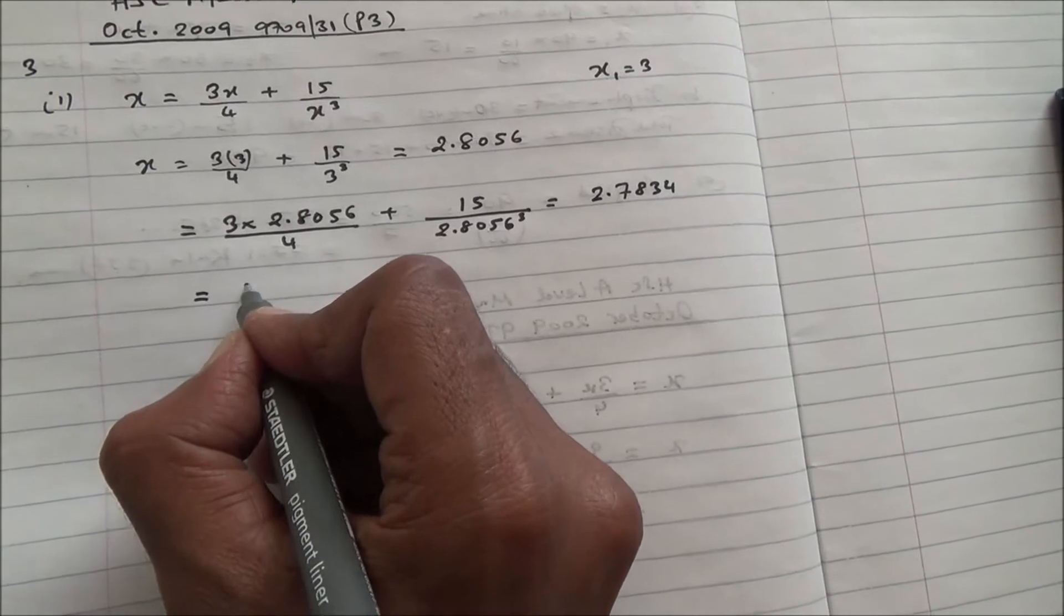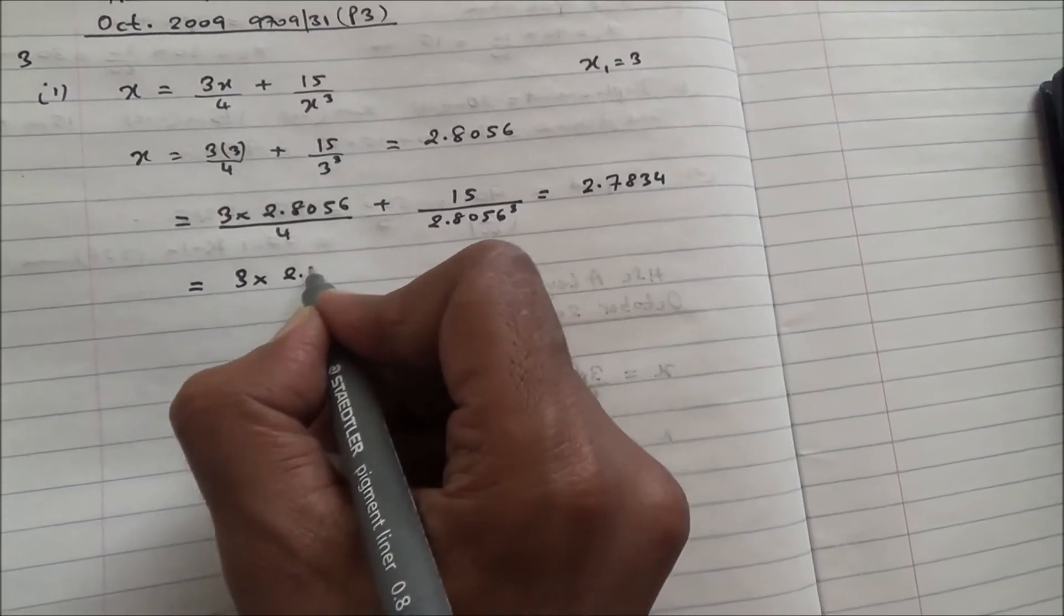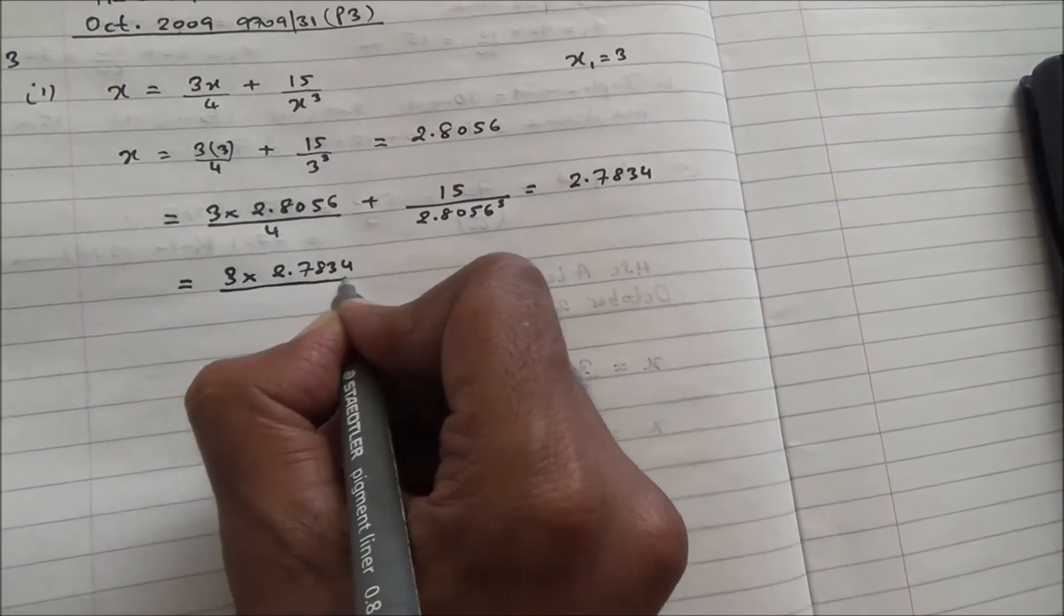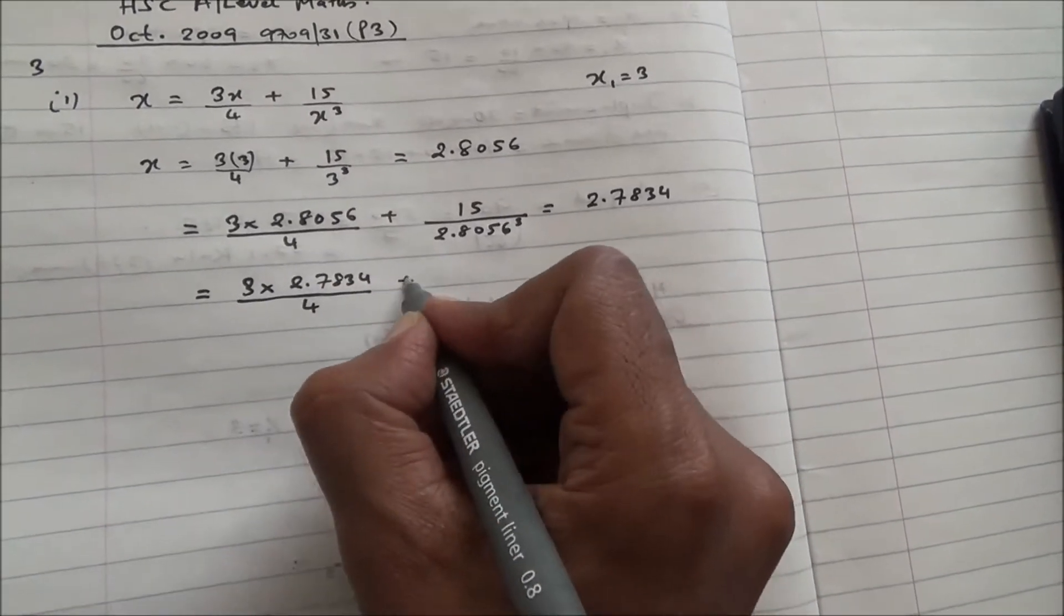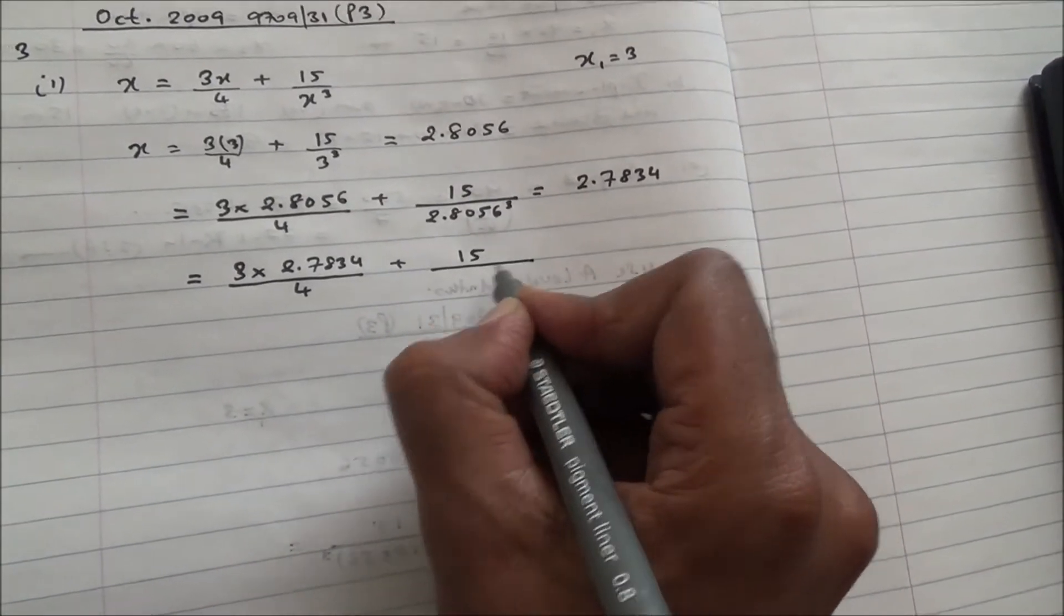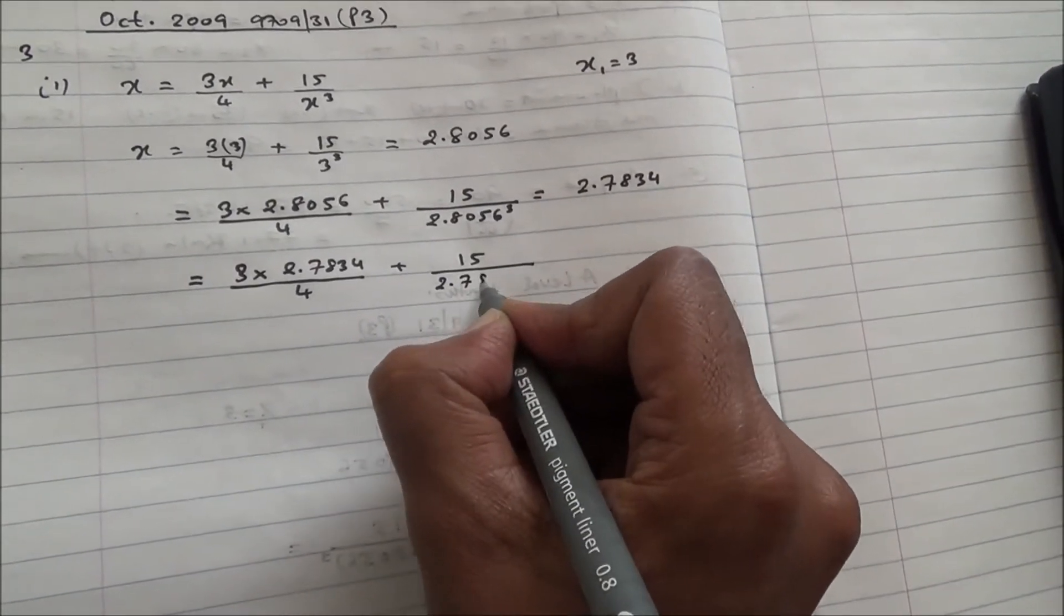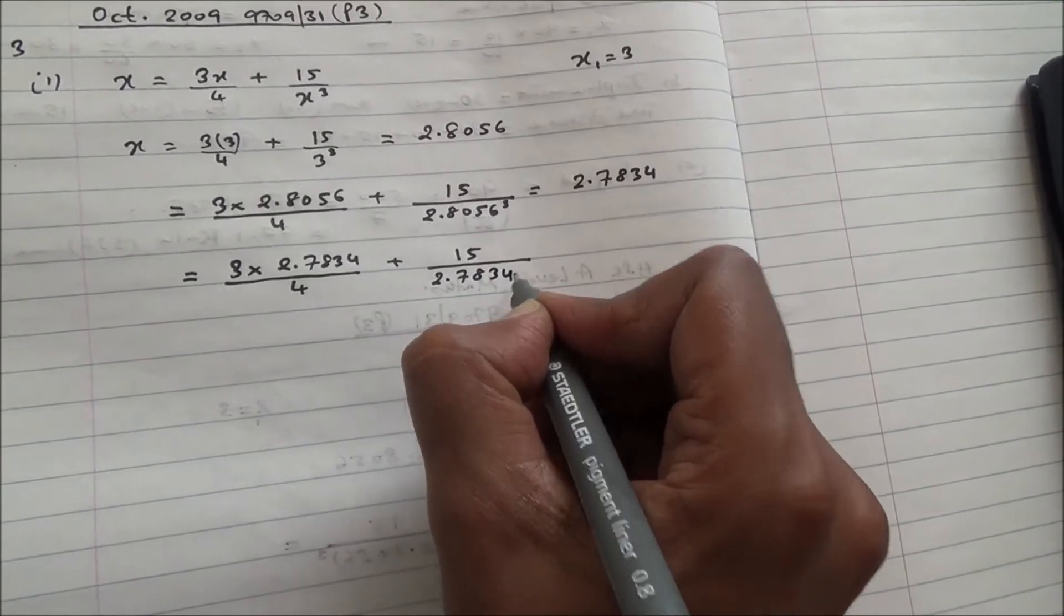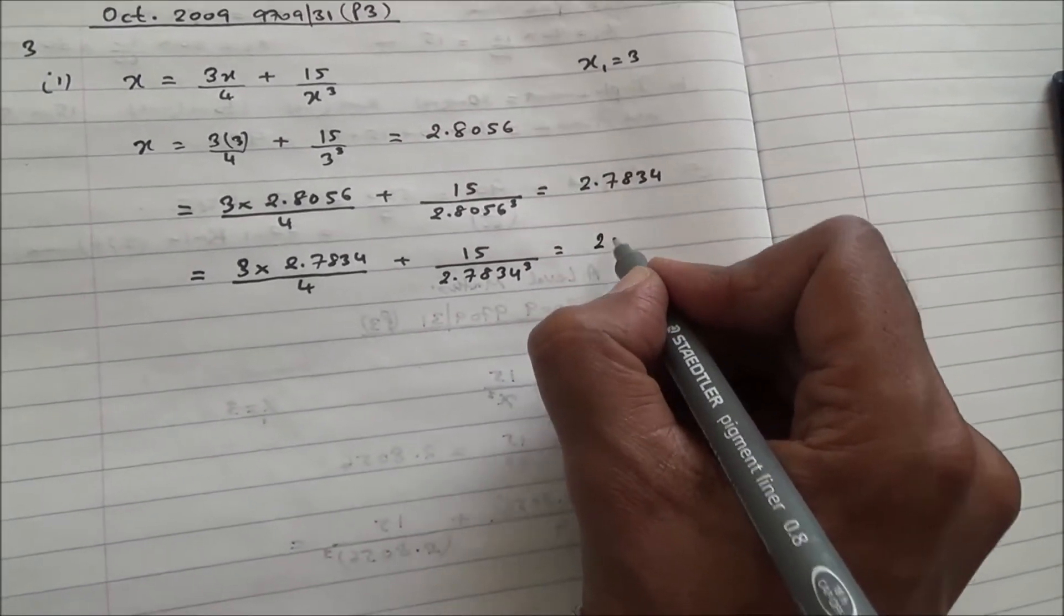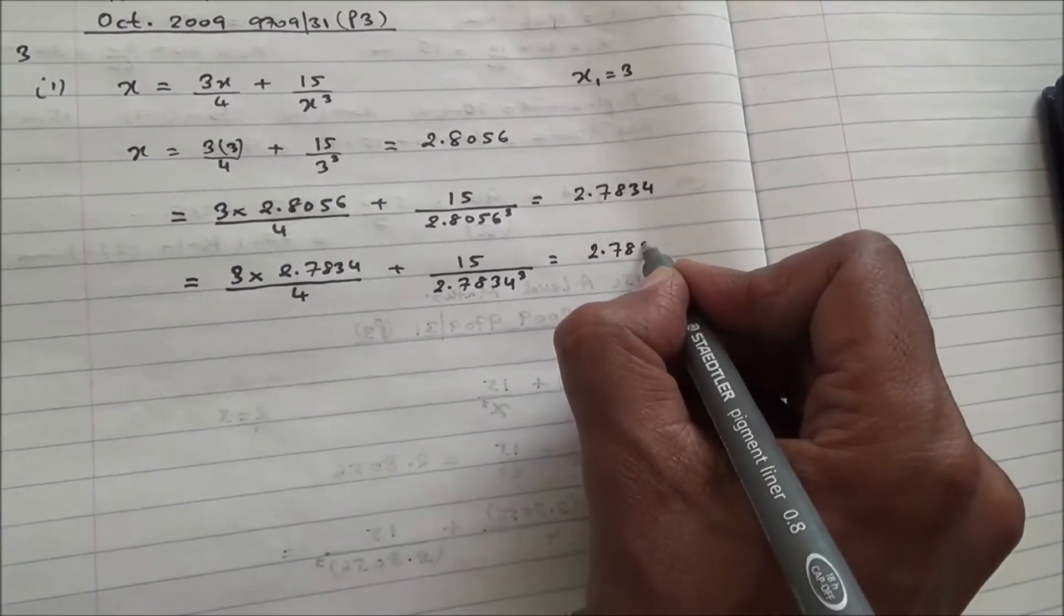Now for the next one, 3 times 2.7834. Remember, the result of each iteration has to be to four decimal places, divided by 4 plus 15 over 2.7834 all of that to the cube. And this one is going to give you, if you check it out, 2.7832.